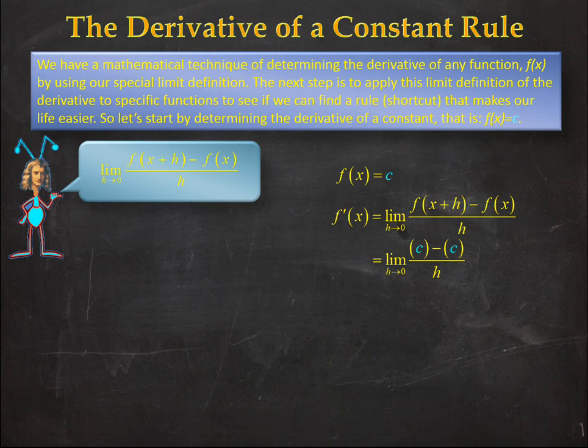Now before I evaluate the limit, let's do some house cleaning. On my numerator I've got c minus c, that's easy, that's zero. So now I have the limit as h goes to zero of zero over h.